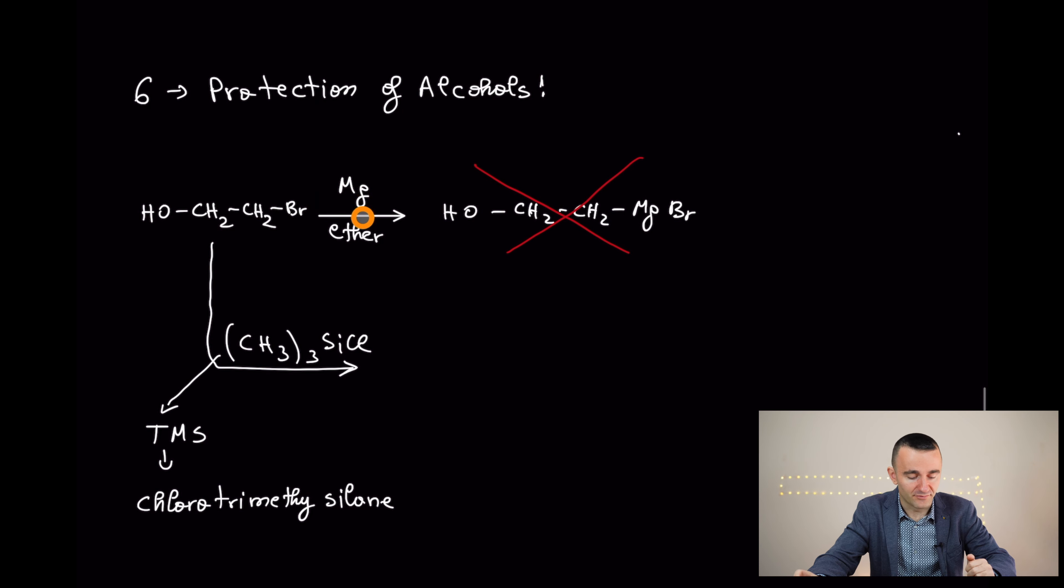Let's move to the protection of alcohols. We discussed in one of our previous videos about Grignard reagent that was sensitive to some certain compounds. So in this case, if you have this compound, if you go straight, you're not going to get this compound. The reason is that this is going to be protonated. The OH group is going to protonate the Grignard reagent. What we do instead,